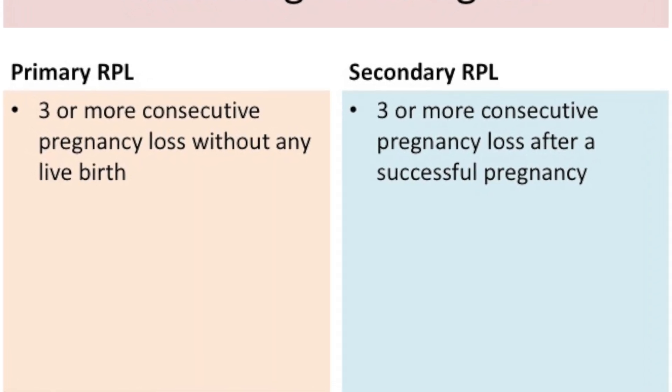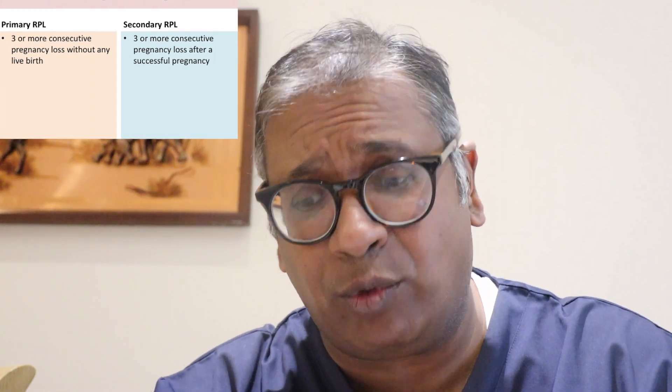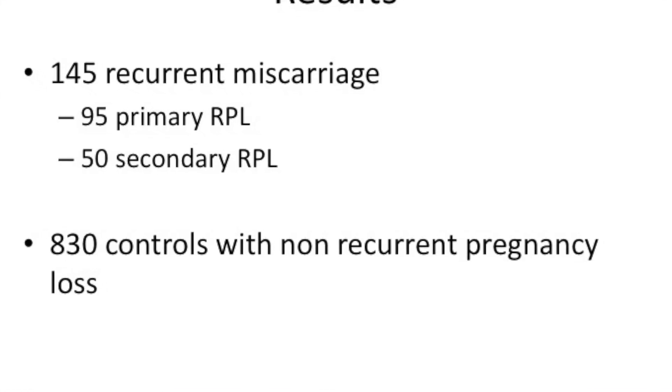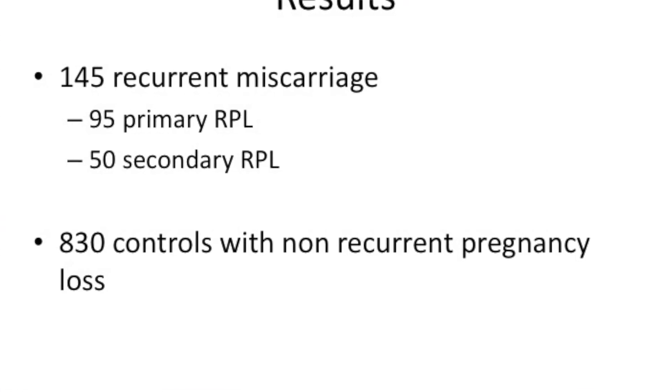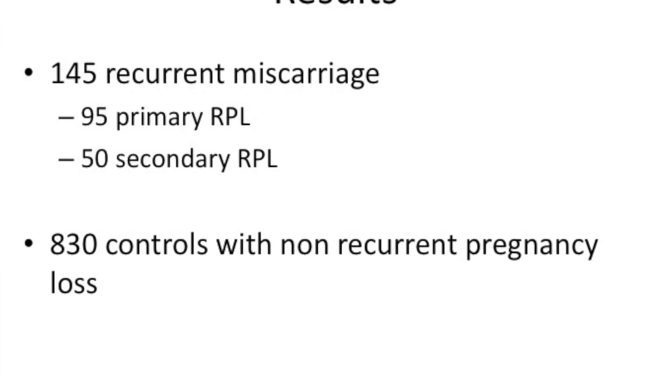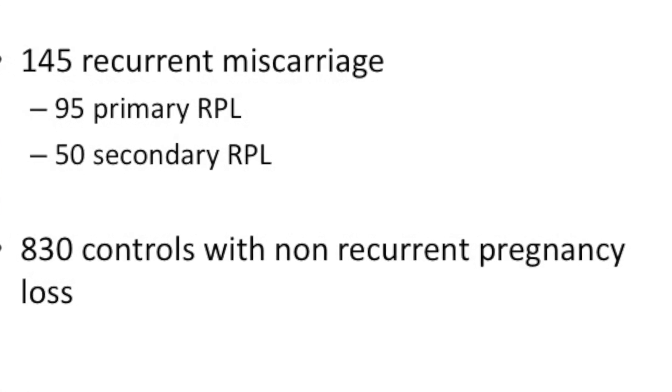What are primary recurrent pregnancy loss? They classified primary recurrent pregnancy loss as those with three or more consecutive miscarriages without any live birth. Secondary was three or more consecutive pregnancy losses after a successful pregnancy. Out of the 145, 95 had primary recurrent pregnancy loss and 50 had secondary recurrent pregnancy loss. 830 pregnancy losses which were non-recurring were the controls.